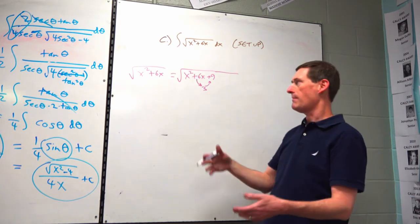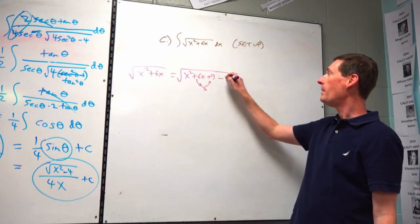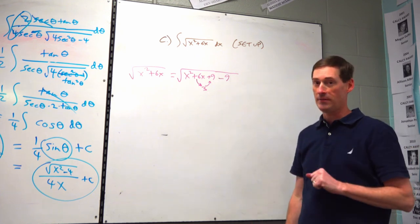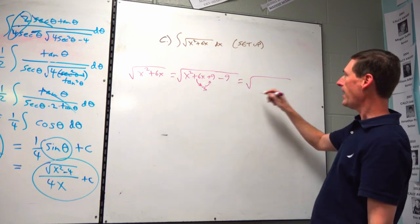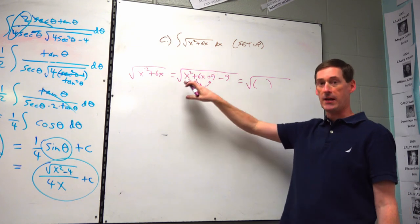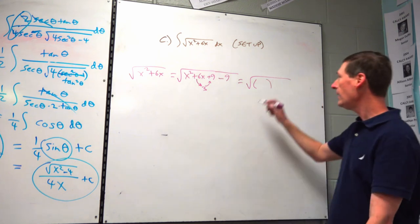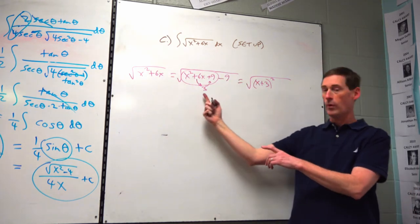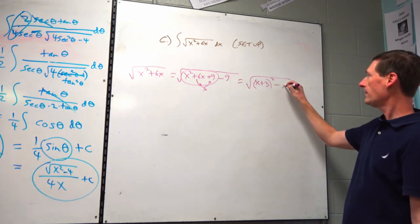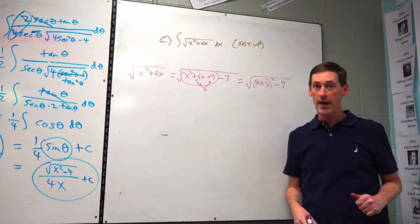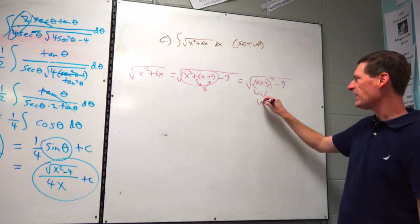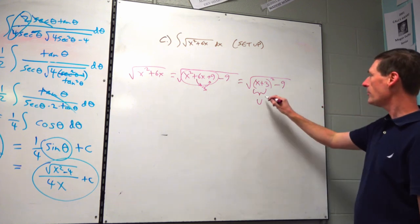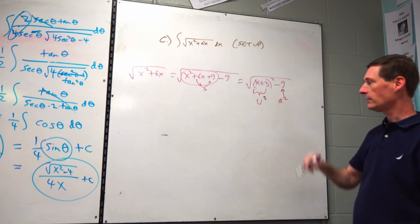The x² + 6x + 9 factors into (x + 3)², so you have (x + 3)² minus 9 under the radical. This is a perfect square trinomial trick: it becomes (x + whatever the middle number was) quantity squared. Now think of (x + 3) as your new variable — kind of like a u — and the 9 is your a². So a = 3.